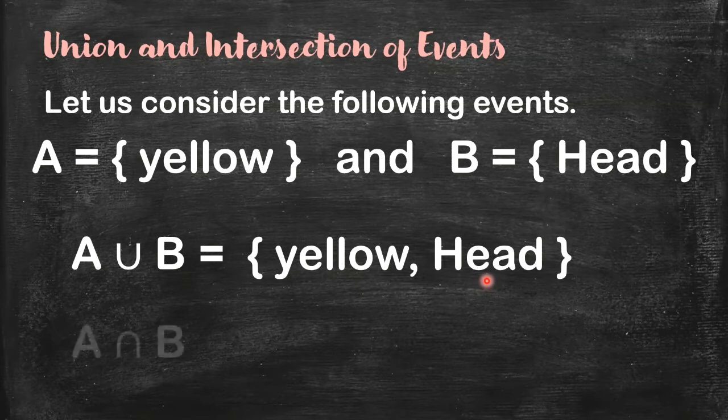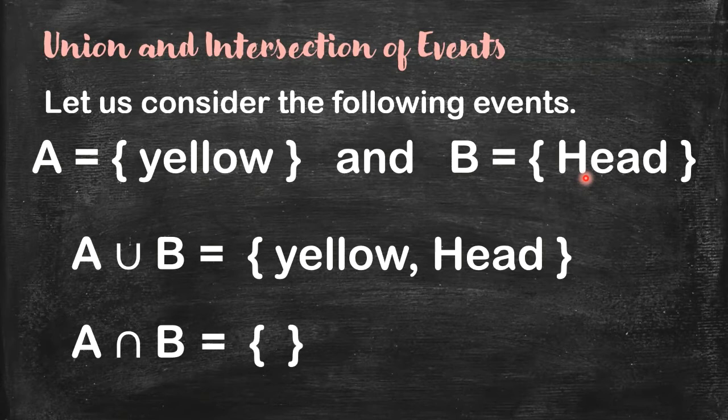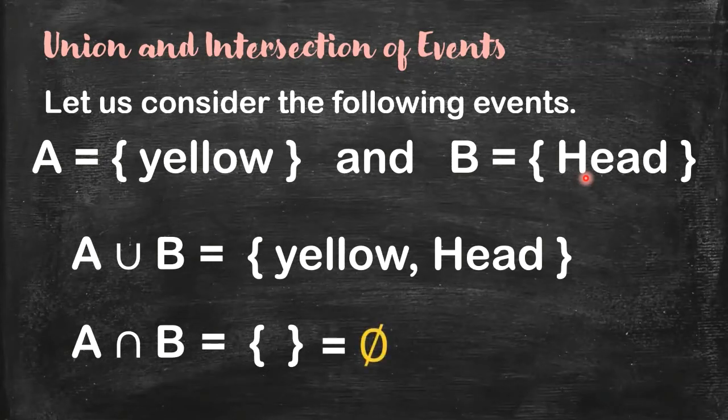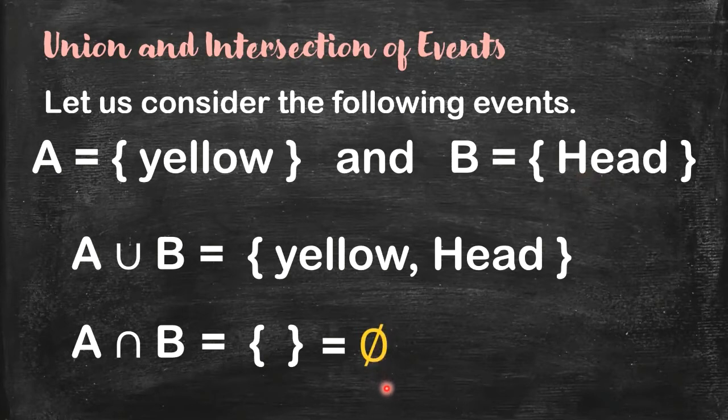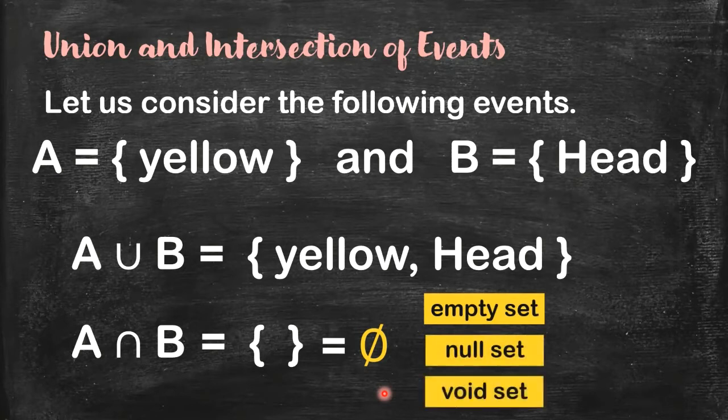What about their intersection? This is our symbol: A intersection B. So what does intersection mean? It means you're going to find common elements, what they both have. But if you check, A has yellow as its element, and B has head. So they have no common elements. Therefore, their intersection contains nothing. We have a special symbol to denote a set that contains nothing. This one, like a zero with a slash. The set with no elements is called an empty set. It can also be called a null set or void set.